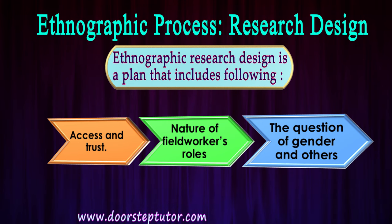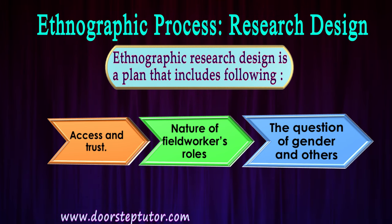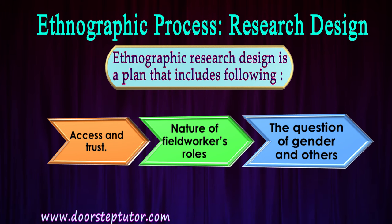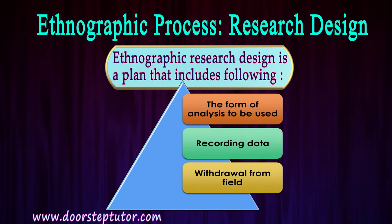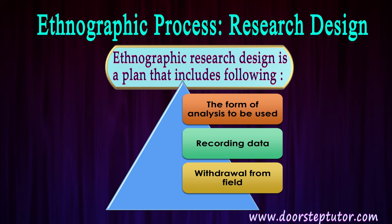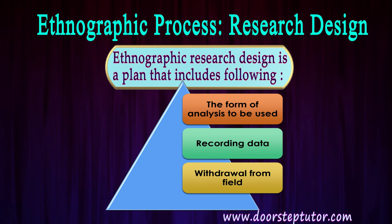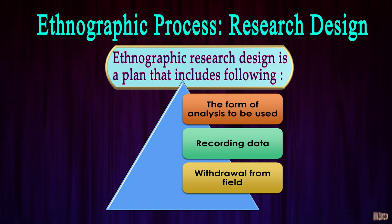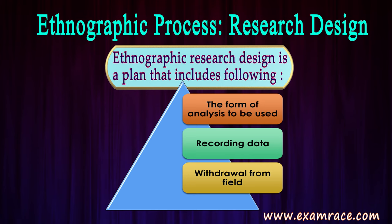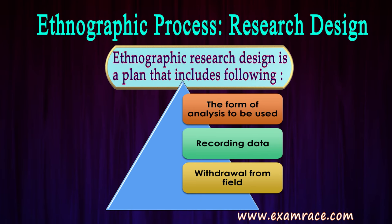The seventh step is the question of gender and other identities that have to be handled in the field, including gender analysis and discrimination in that society. The eighth step is the form of analysis to be used — what kind of analysis is being applied by the researcher. The ninth step is recording data: the researcher must record what has been observed through interactions, conversations, and participating in the rituals of the native people.